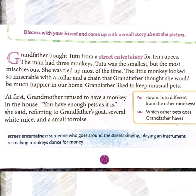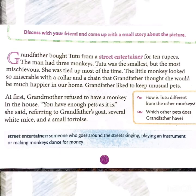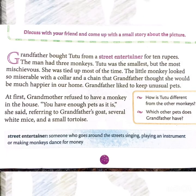Grandfather bought Tutu for just 10 rupees. The man had three monkeys, and Tutu was the smallest but the most mischievous — mischievous means a troublemaker. She was tied up most of the time as she was the naughtiest among all. The street entertainer always kept her tied up, but Grandfather thought she would be very happy in his home.